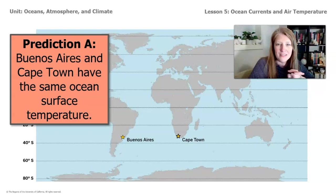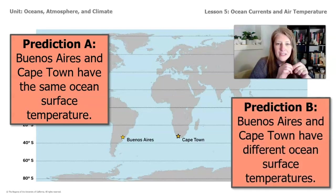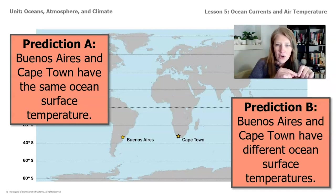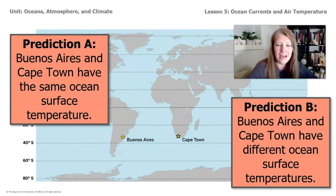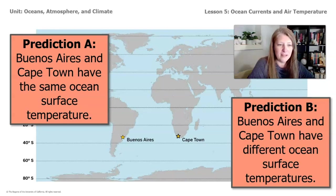Knowing that, I want you to think about how the air temperature of these two places at similar latitudes would compare. We have two predictions: prediction A is that Buenos Aires and Cape Town have the same ocean surface temperature, or prediction B is that Buenos Aires and Cape Town have different ocean surface temperatures. This matters because both cities, like Christchurch, New Zealand, are found on the coast, so they're close to ocean currents.